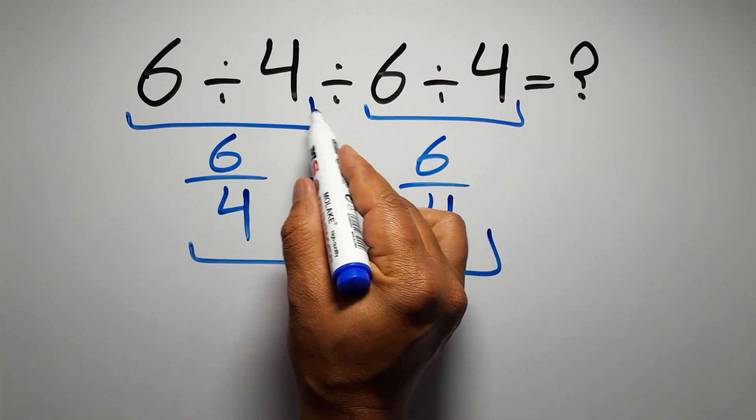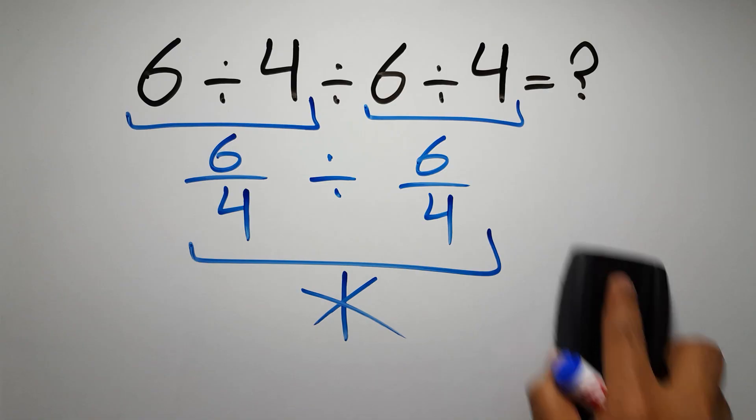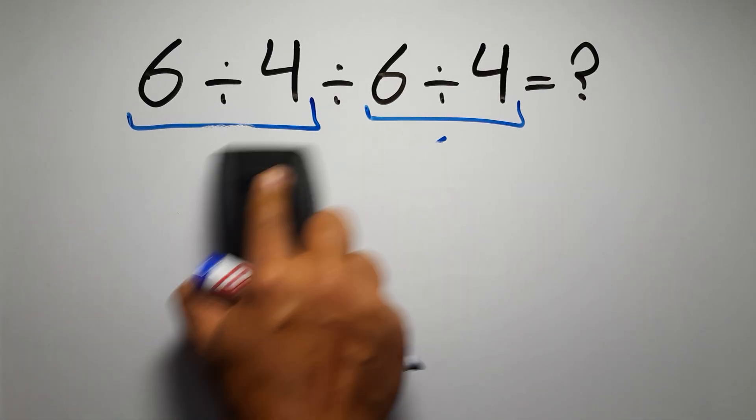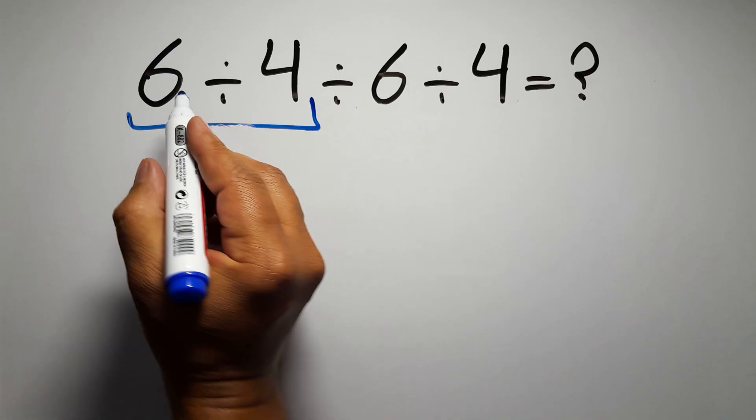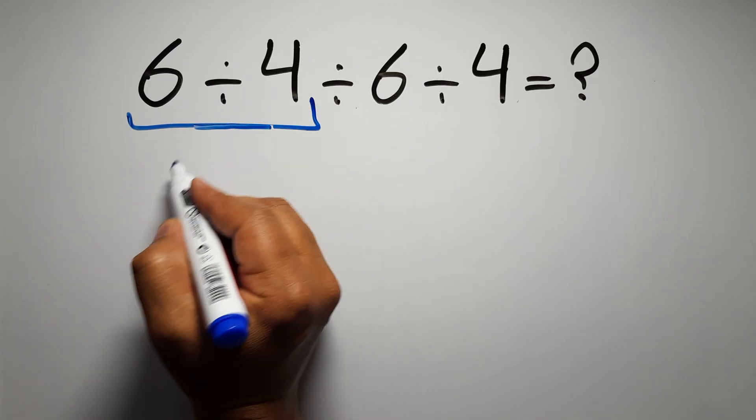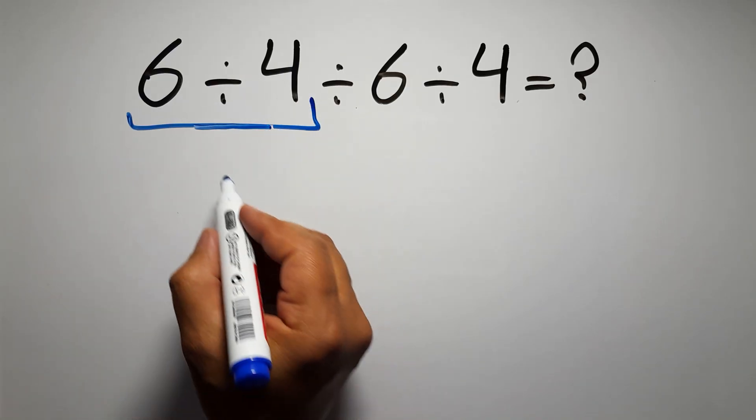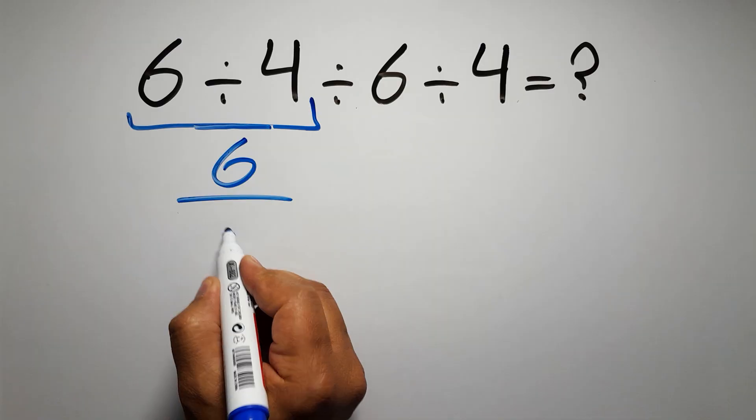If we do this division before this division, it is wrong. So first we have to do this division. 6 divided by 4 can be written as 6 over 4.